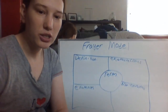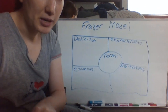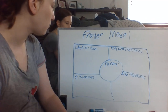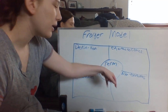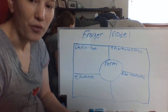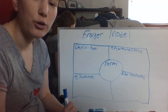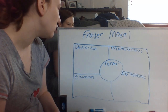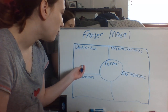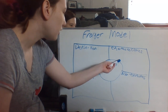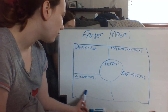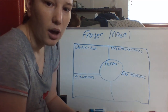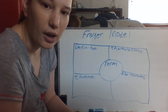I took the time to draw out what the Frayer model looks like. In the middle, you would have your term or vocabulary word that the students are going to write down. There are four things the students need to do: a definition, characteristics, examples of the word, and non-examples, opposites, or antonyms of the word.